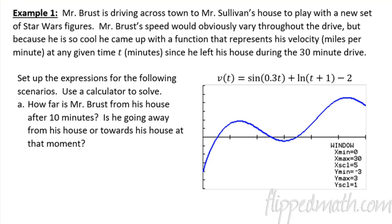I'm going to move on here to our first example. Number one, Mr. Brust is going to drive across town to Mr. Sullivan's house to play with some Star Wars. We've come up with an equation here, a function that represents his velocity. Now this is a made up thing, but the important thing is to know that it's not miles per hour, it's miles per minute. That's important because we're only measuring by minutes over the first 30 minutes. The scale here is your window and your scale. This is five minutes, 10 minutes, 15, 20, and so forth.